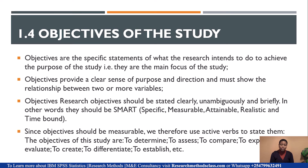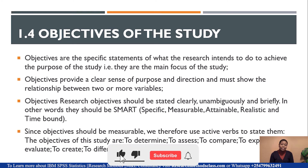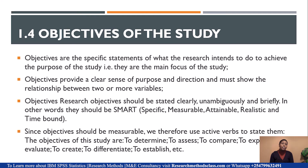Then we look at the objectives of the study, which is Section 1.4. Objectives are the specific statements of what the research intends to do to achieve the purpose of the study. They provide a clear sense of purpose and direction and must show the relationship between two or more variables, with that relationship stemming from the title. Objectives should be stated clearly, unambiguously, and briefly — that is why we say objectives should be SMART: specific, measurable, attainable, realistic, and time-bound. Since objectives must be measurable, we use active verbs to state them.